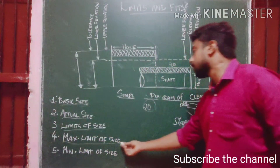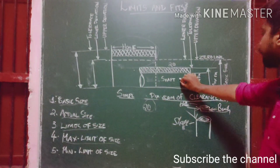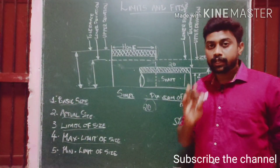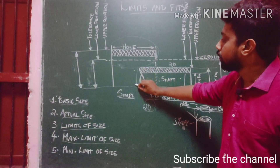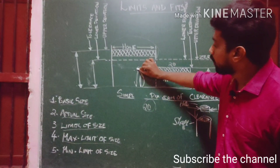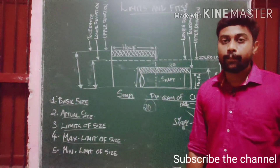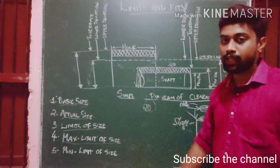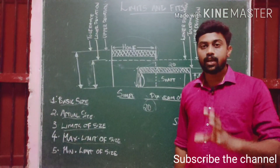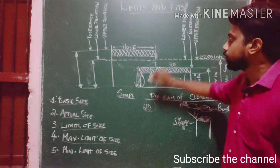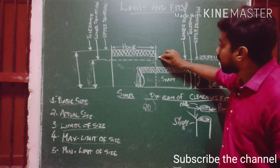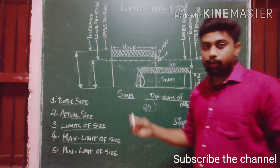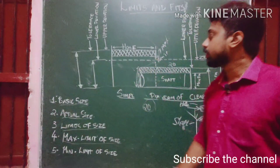This is the maximum limit of size — the maximum limit of the shaft. Maximum deviation and lower deviation will define this. This shaft has a maximum limit. The basic size, minimum size, and minimum limit of size define the range. One shaft has a minimum limit and maximum limit. For the hole, the minimum limit and maximum limit similarly apply.